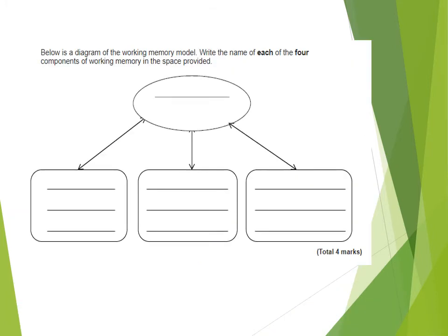Looking at some exam questions you might get — you might get a diagram to fill in. The top circle or oval needs to have 'central executive' written there. The other three — episodic buffer, visuospatial sketchpad, and phonological loop — it doesn't matter what order you put them. As long as central executive is at the top, you can have the other three components in any order along the bottom.